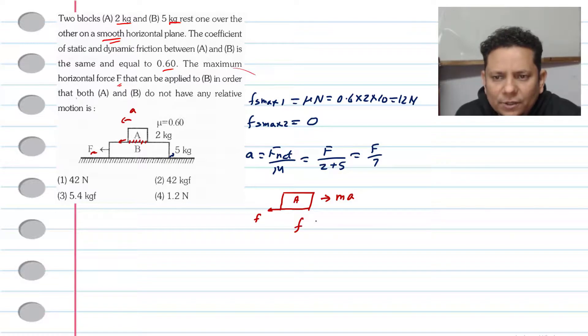For the blocks to move together, we need F should be less than or equal to Fs maximum. This means 2 kg multiplied by a, which is F divided by 7, should be less than or equal to Fs maximum 1, and its value is 12.